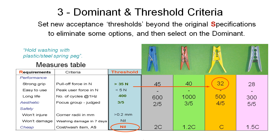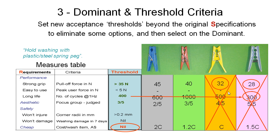Starting with the first threshold: we've lifted pull-off force to 35 newtons, which means the yellow peg no longer meets it, and the grey peg at 28 newtons is also eliminated. For long life, we've lifted the threshold from 200 to 400 cycles, which would also eliminate the grey peg. For aesthetics, the blue peg scores 2 out of 5, and we've lifted the threshold to 3 out of 5, so it drops out. With only the red peg remaining, that would be our choice using this selection method.